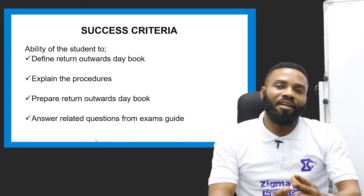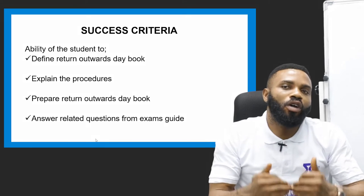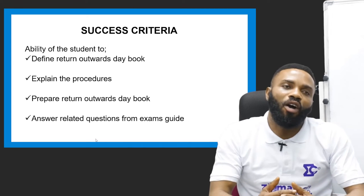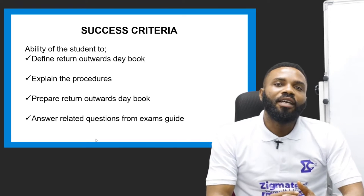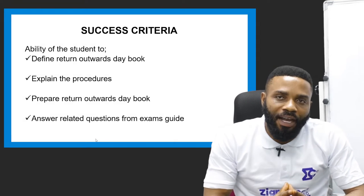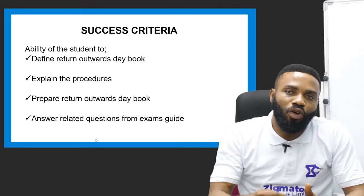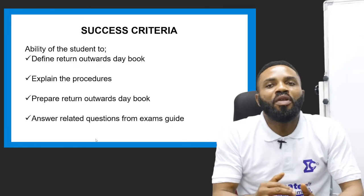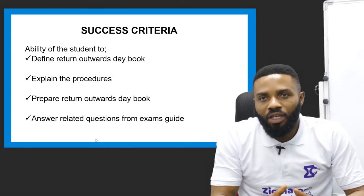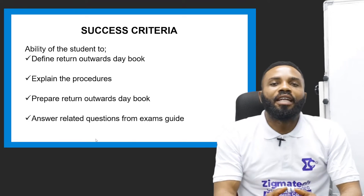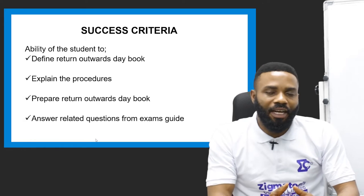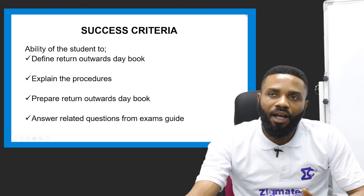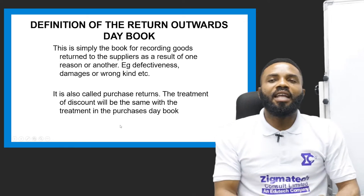Having done that, we will consider whether we have achieved our lesson objectives through what we call success criteria. This serves as our benchmark. Number one: if we have been able to define the returns outwards day book. Number two: if we have explained the procedures and prepared the returns outwards table. Number three: if we have answered related questions from our exam guide.